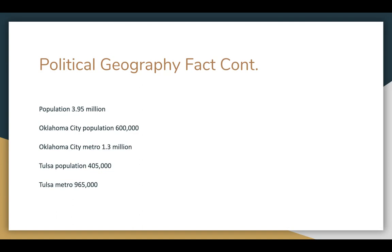The population of Oklahoma is 3.95 million. Oklahoma City has about 600,000 people, and the metro area including Edmond and surrounding cities is about 1.3 million. Tulsa's population is about 405,000, and the Tulsa metro is about 1 million people. So half the state's population is made up of just two metro areas. We really have two and a half large cities if we include Lawton. The other half of the population lives in many small towns across the state.